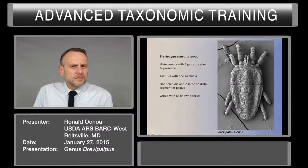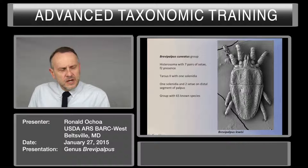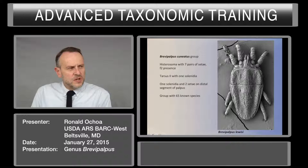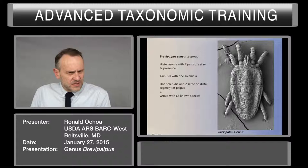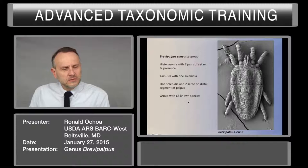The last group, Brevipalpus cuniatus, is the least known. However, there is one species very important for us — Brevipalpus lewisi — as this species is common on citrus in California. Seven pairs of setae, F2 is present. Tarsus 2 with one solenidia, one solenidia and two setae on the distal segment of the palpus. The group is the biggest one with 65 species known.